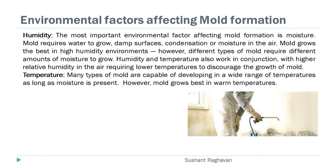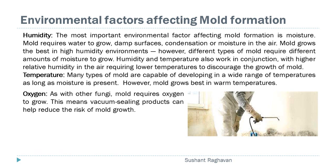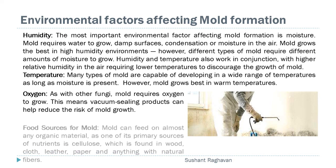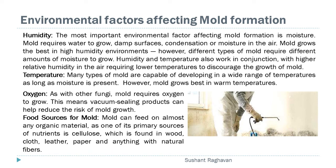Temperature: many types of mold are capable of developing in a wide range of temperatures as long as moisture is present; however, mold grows best in warm temperatures. Oxygen: as with other fungi, mold requires oxygen to grow. This means vacuum sealing products can help reduce the risk of mold growth. Food sources for mold: mold can feed on almost any organic material, and one of its primary sources of nutrients is cellulose, which is found in wood, cloth, leather, paper, and anything with natural fibers.